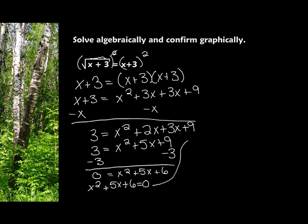But now what I need to do is I need to factor it, because I need to solve for x. So when I factor this, I get x plus 3 times x plus 2 equals 0. So I need to solve for x. I have x plus 3 equals 0, so x equals negative 3. And x plus 2 equals 0, so x equals negative 2.